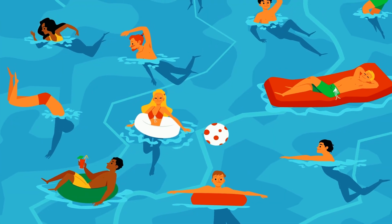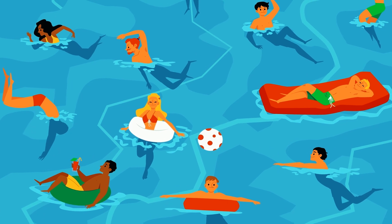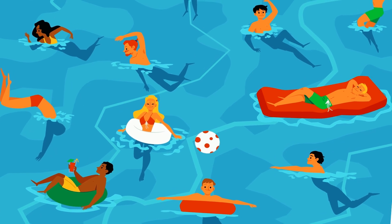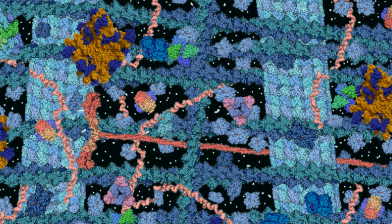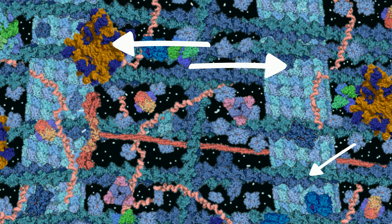Take a look at the cytoplasm. Here's the cytoskeleton. Then we have ribosomes, some soluble proteins, small molecules, and RNA.